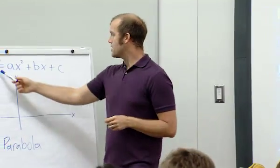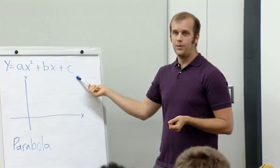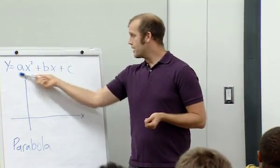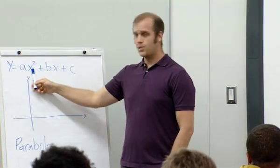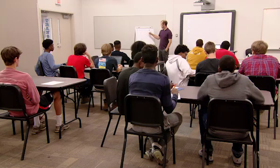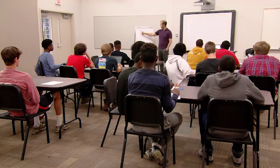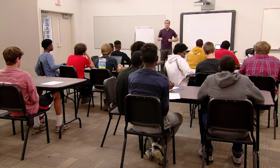You've certainly seen the equation before. It's also called a quadratic equation. A quadratic equation models a parabola, and it has an x-squared term, an x term, and a constant with no x at all. Each of those also has a coefficient — a, b, and c — that modifies it.